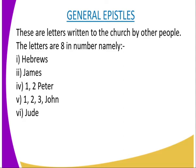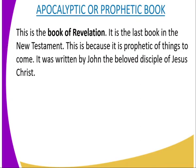The other category of books in the New Testament is the Prophetic Books, also known as Apocalyptic or Prophetic Books. This is the book of Revelation. It is also the last book in the New Testament. It is prophetic of things to come, and it was written by John, the beloved disciple of Jesus. So in the New Testament, you have one prophetic book: the book of Revelation.